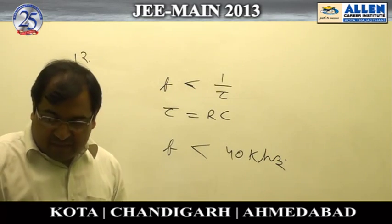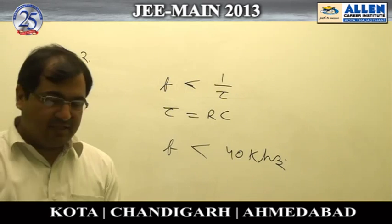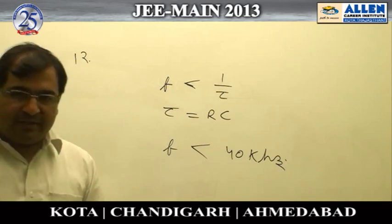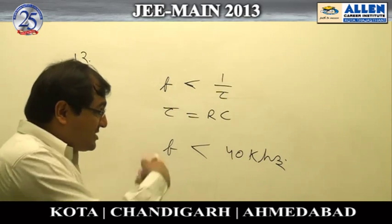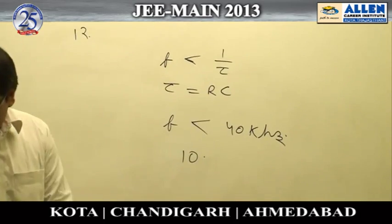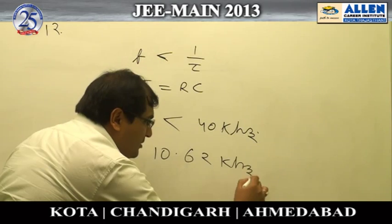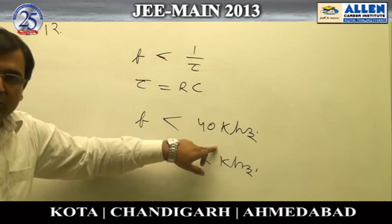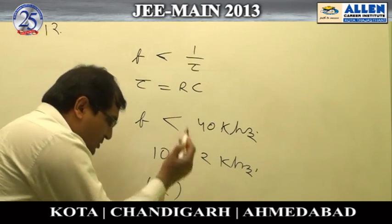There are two options smaller than 40 kilohertz: 10.62 kilohertz and 5.31 kilohertz. Since the question asks for the maximum possible frequency less than 40 kilohertz, the correct answer is 10.62 kilohertz.